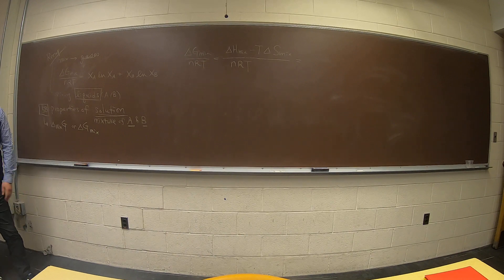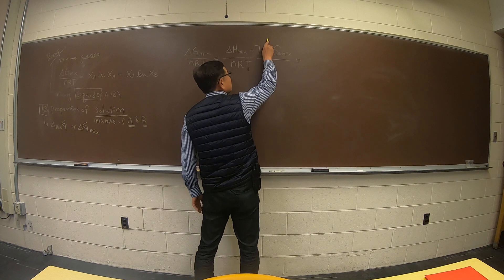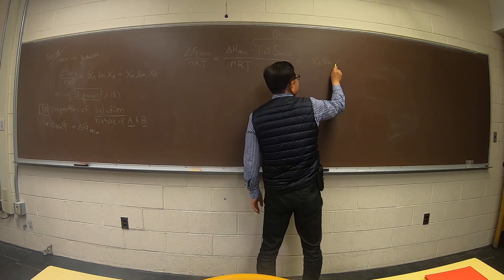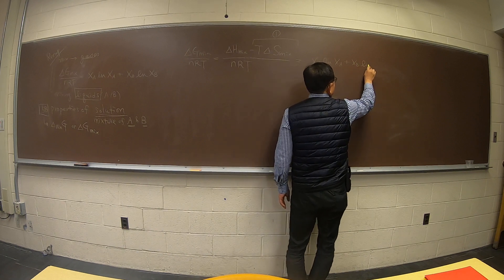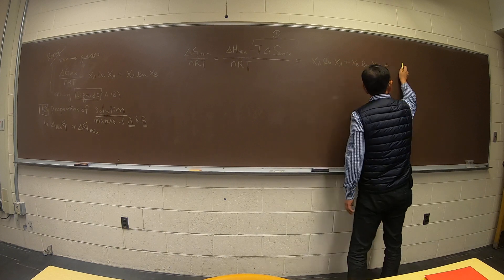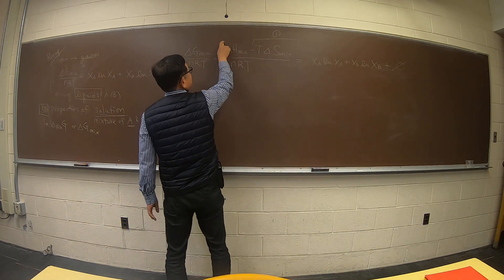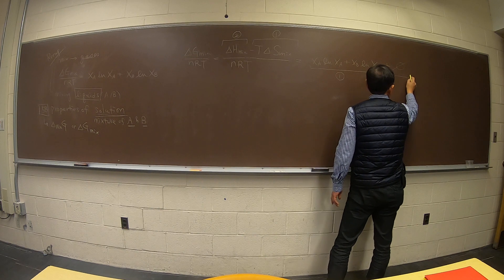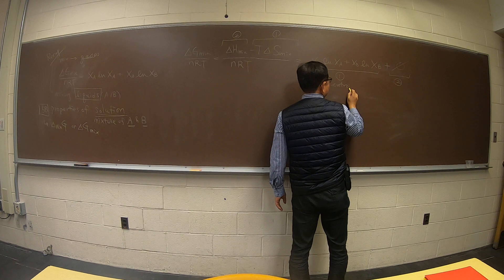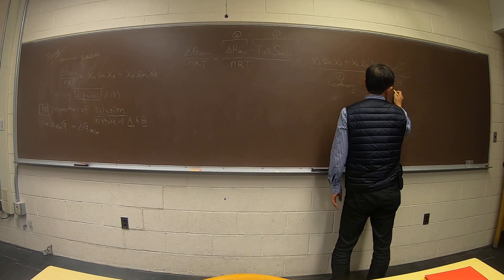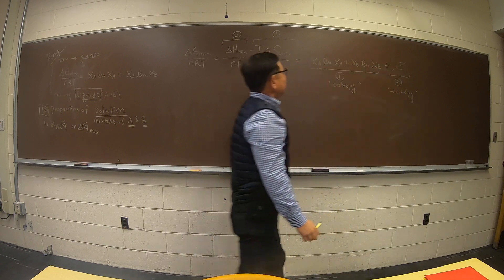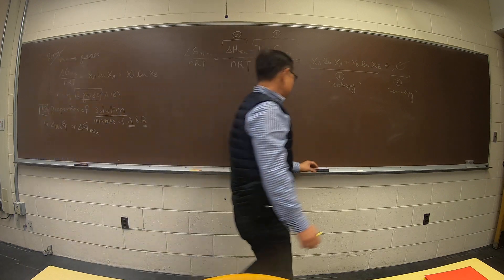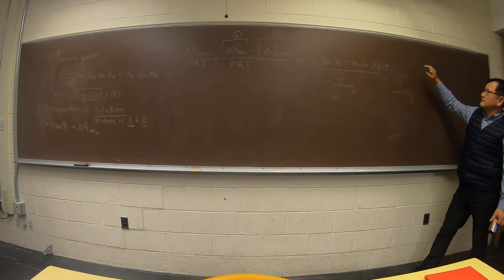I just broke delta G mix into two terms. The first term is the enthalpy of mixing and the second term is the entropy of mixing. This energy is normalized so it is dimensionless, and both terms should be dimensionless. The delta H mix equals zero assumption is best for gas mixtures, and people want to borrow this idea for liquid mixtures.